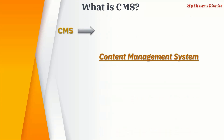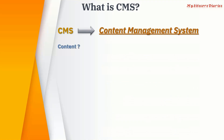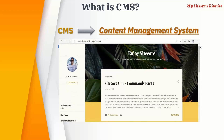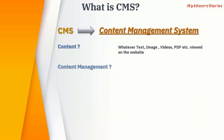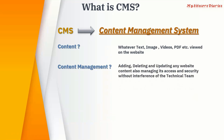CMS stands for Content Management System. Content is basically whatever text, images, videos, PDFs, etc. that are viewed on the website. For example, on my blog site, whatever you are viewing — the heading, my photo, my background, any labels — all of that is content.